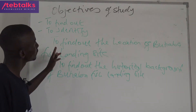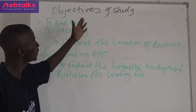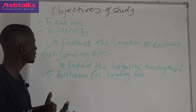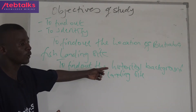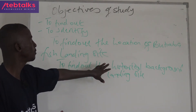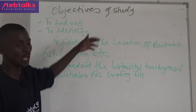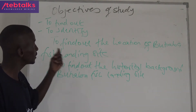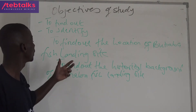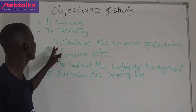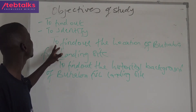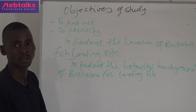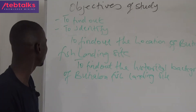These objectives are supposed to come in order. We write them starting with location, then historical background. You cannot begin from historical background then location — that would be a wrong order, because the first thing to know in fieldwork objectives is: where am I going? The location of the place.